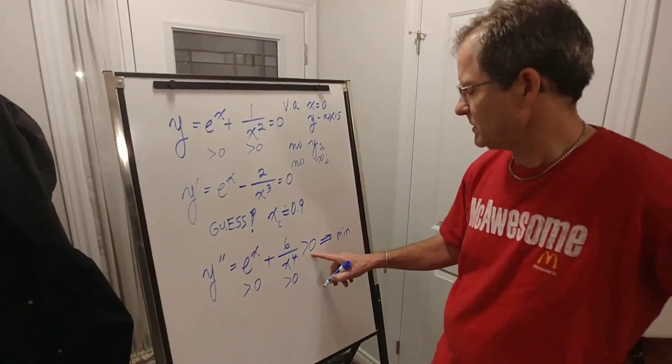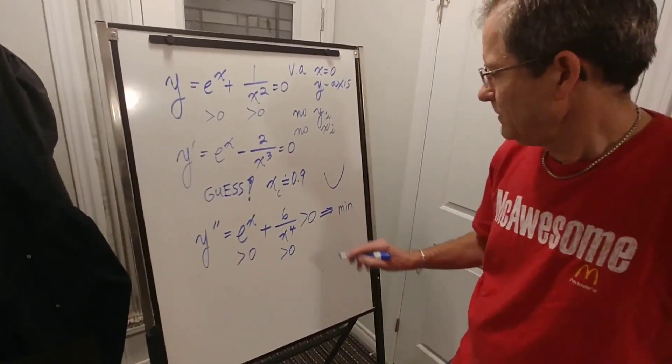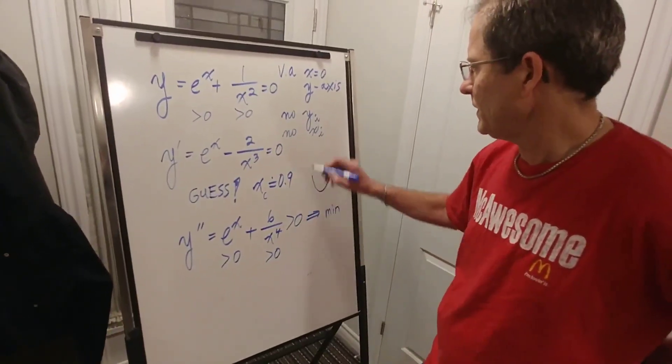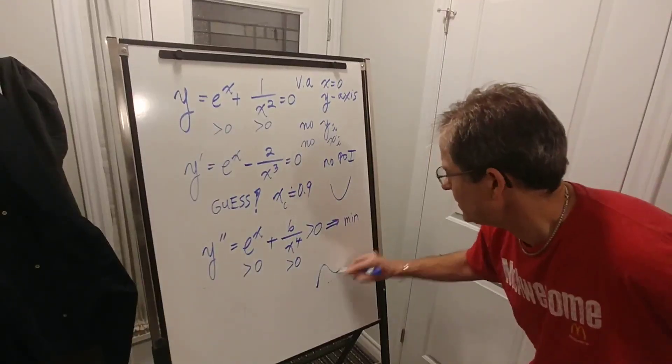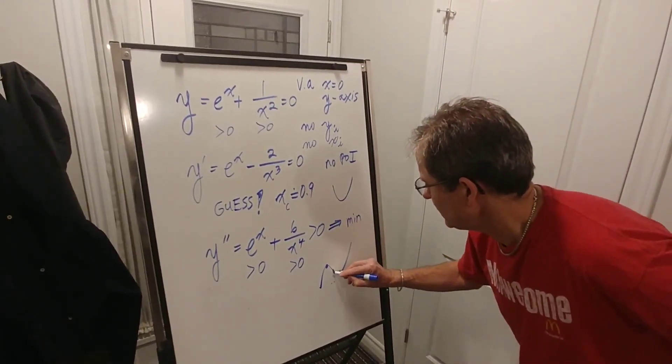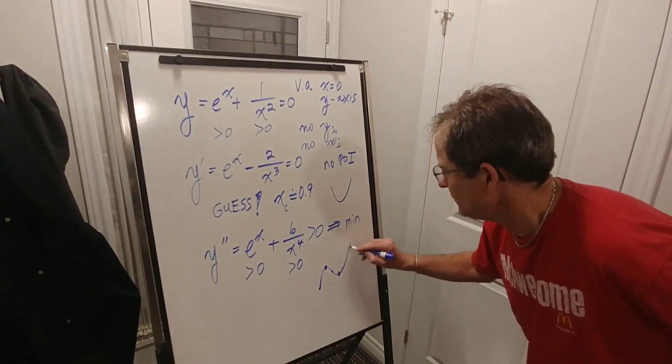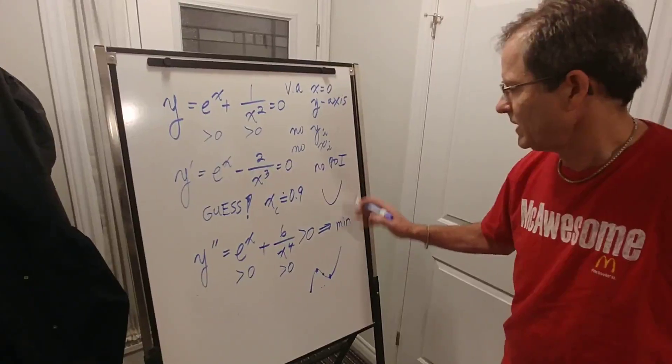This means the slope is always increasing, so it's going to be shaped like that. And because it's never zero, there's no points of inflection. A point of inflection is when you have a maximum here, a minimum here, and right in between where the curvature changes from curving down to curving up, that's a point of inflection. That's where the second derivative is zero, but we don't have that here.